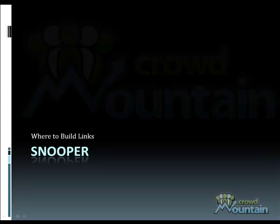We want to build links at sites that are in favor with Google — the sites that Google loves the most and tends to rank the highest. In doing so, we will make sure that our links are indexed quickly and may have a higher weight than a link at a site that isn't in such favor with Google. To do this, we're going to use the Crowdmountain Snooper tool.